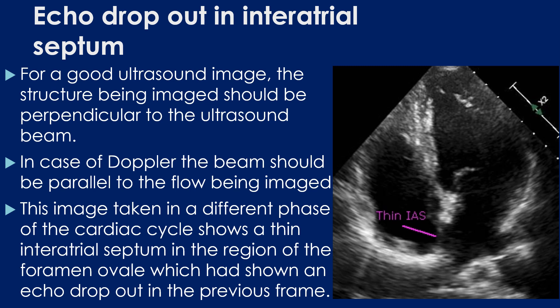In case of Doppler echo, the beam should be parallel to the flow being imaged. This image, taken in a different phase of the cardiac cycle, shows a thin intra-atrial septum in the region of the fossa ovalis, which had shown an echo dropout in the previous frame.